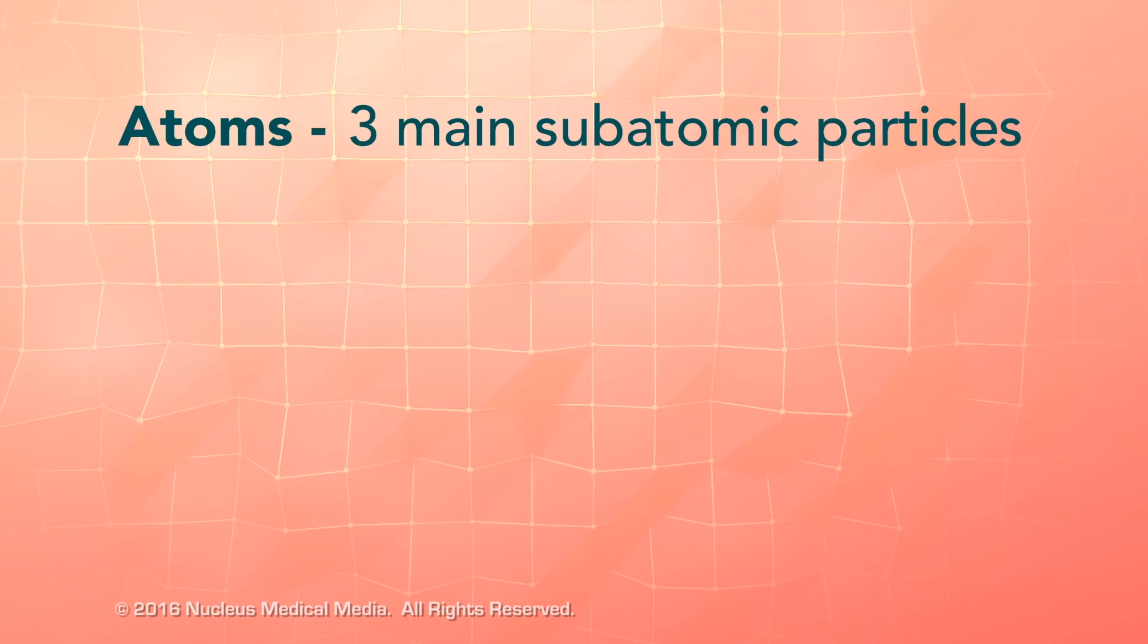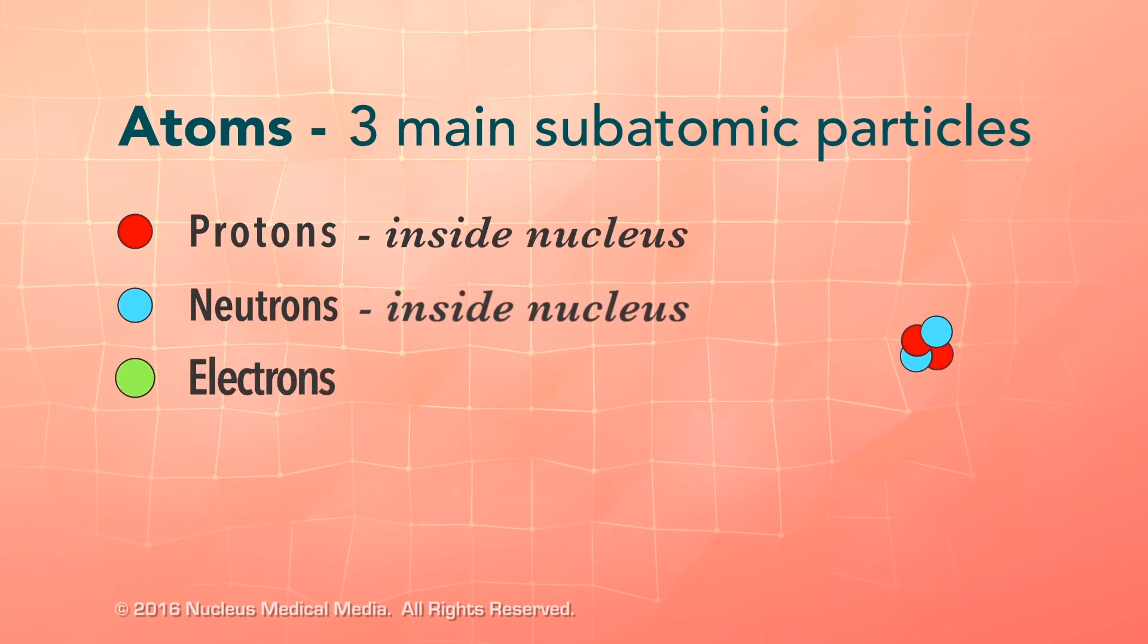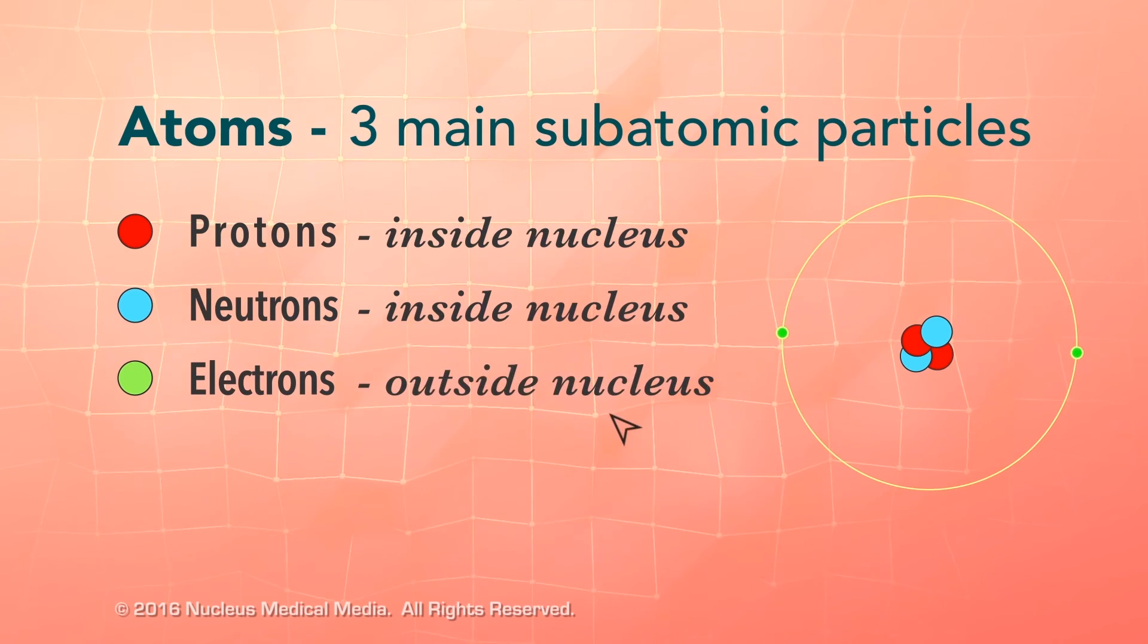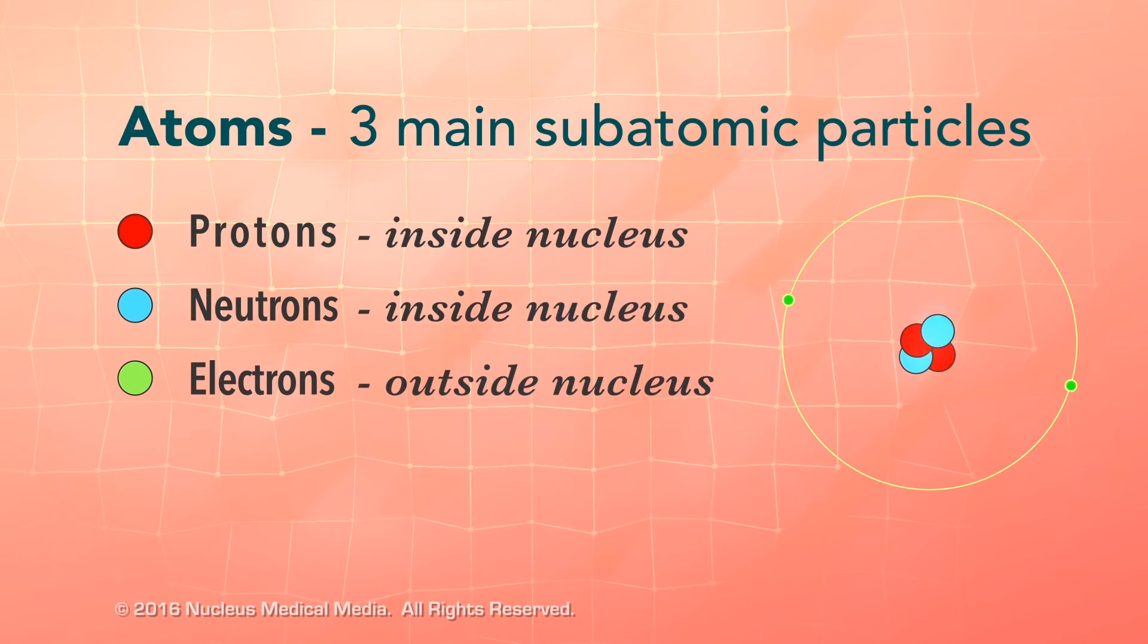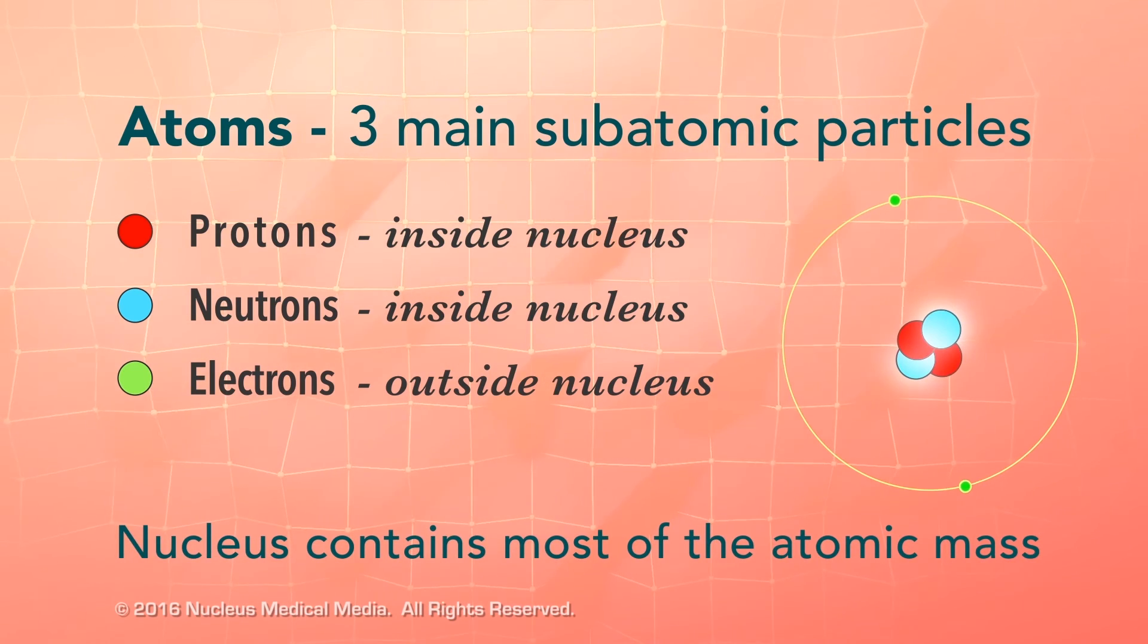In summary, an atom has three main subatomic particles: protons and neutrons in the nucleus, and electrons in shells outside the nucleus. The sum of the protons and neutrons in the nucleus makes up almost the entire mass of the atom.